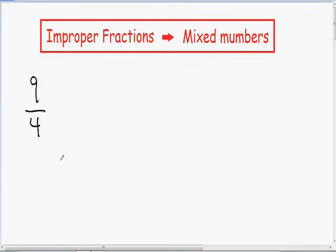Welcome to my video on changing an improper fraction into a mixed number. Here we have the improper fraction 9 over 4. It's improper because we have a numerator of 9 which is bigger than our denominator, and we want to change it into a mixed number.